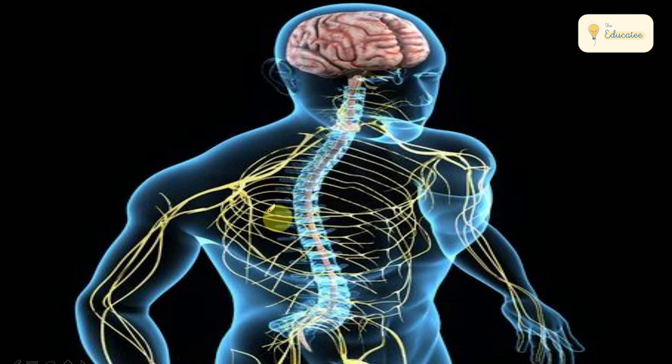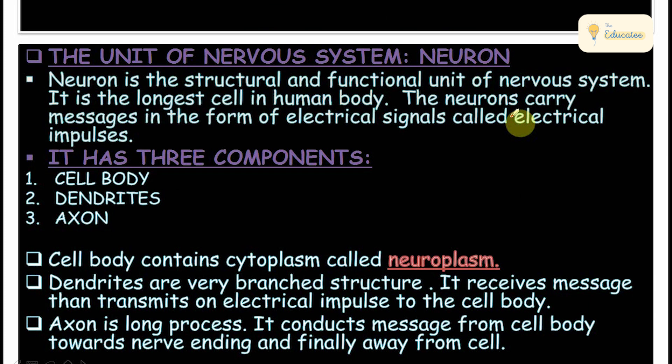Our basic nervous system consists of the brain, spinal cord, and nerves coming out from the brain and spinal cord. Now, what is the unit of the nervous system? Just like the cell is the structural and functional unit of life, the Neuron is the structural and functional unit of the nervous system. It is also the longest cell of the human body.